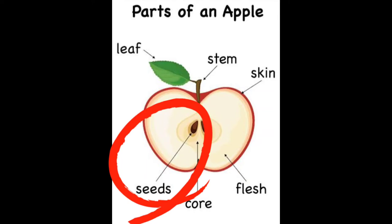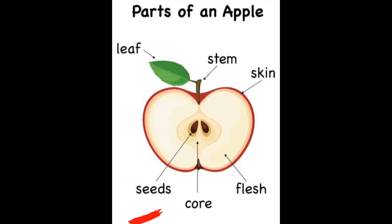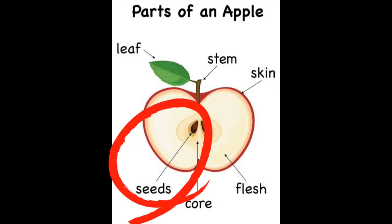The last part is the seed of an apple. It is placed in the center of the core. The seed is the beginning of an apple tree, so it's important. Bagian terakhir adalah bagian biji dari buah apel. Bagian bijinya biasanya terletak di tengah-tengah dari bagian inti sebuah buah apel. Bagian biji adalah awal-mula dari pohon apel dan juga buahnya. Jadi, biji adalah bagian yang juga penting untuk apel dan juga pohonnya.